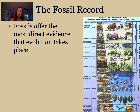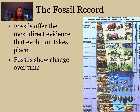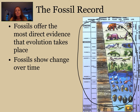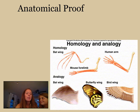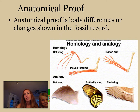Looking at the fossil record in more detail: fossils are our most direct evidence that evolution occurred. Fossils show us actual change over time. If you look at the picture on the side, you can see that as we go up, the fossils shown change. Fossils found in older rocks are different from ones found in newer rocks.